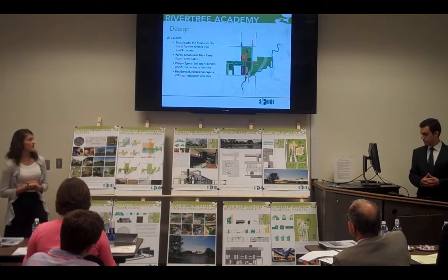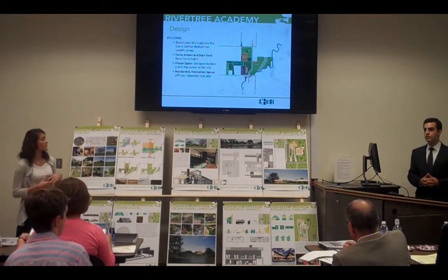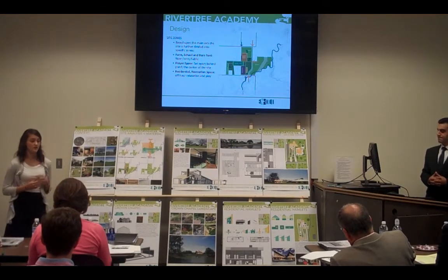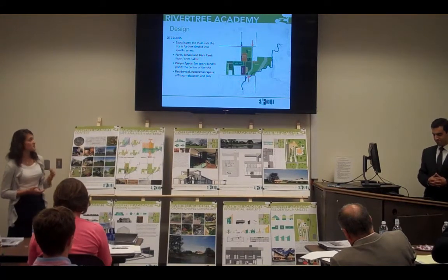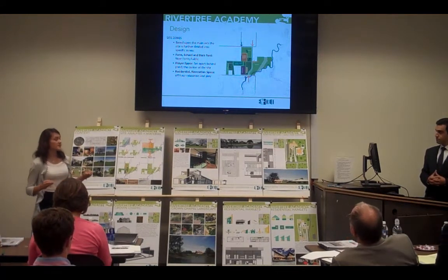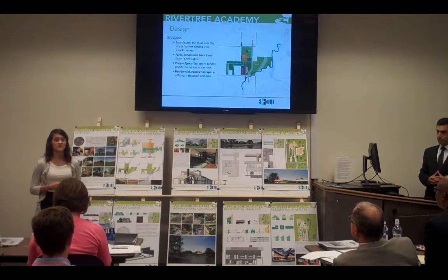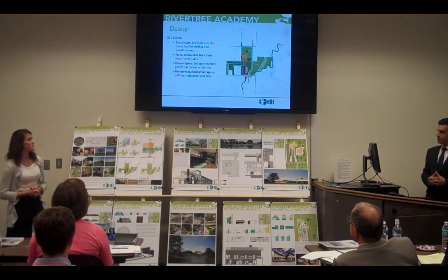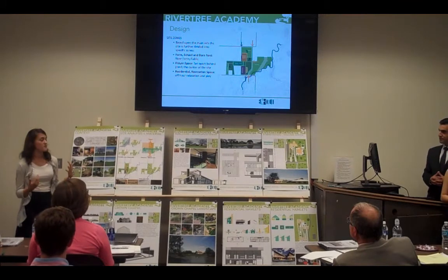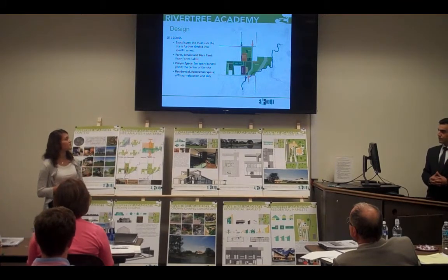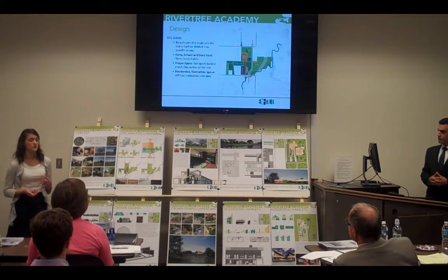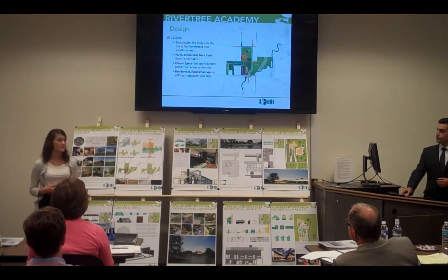Next, we further divided our site into zones based on programmatic needs. The school and the barn with the market are located in close association with each other as well as the farm. The prayer space is set apart and quiet for students so they can have a place to meet with the Lord and be set apart from their daily life. Down south, connected but set apart from the school and barn is the private space — residential and recreation for students.